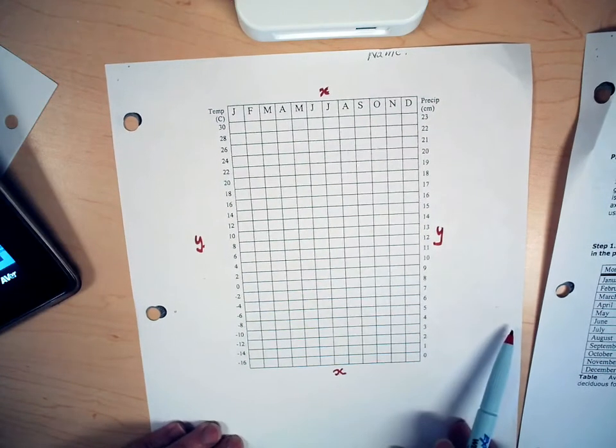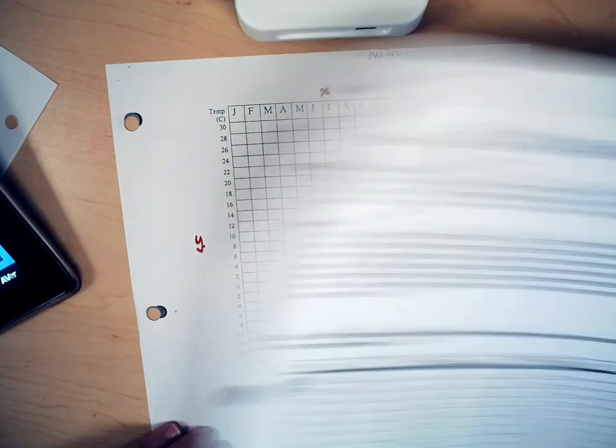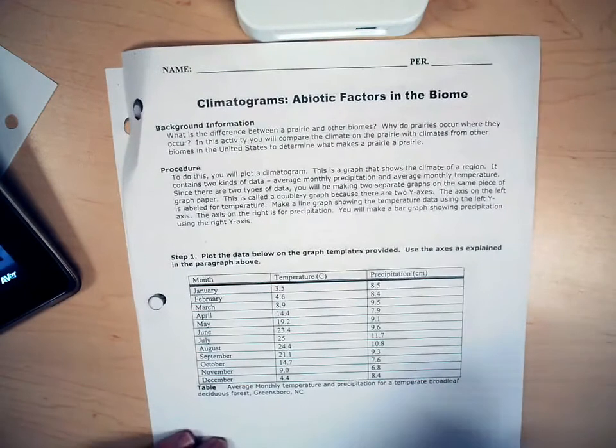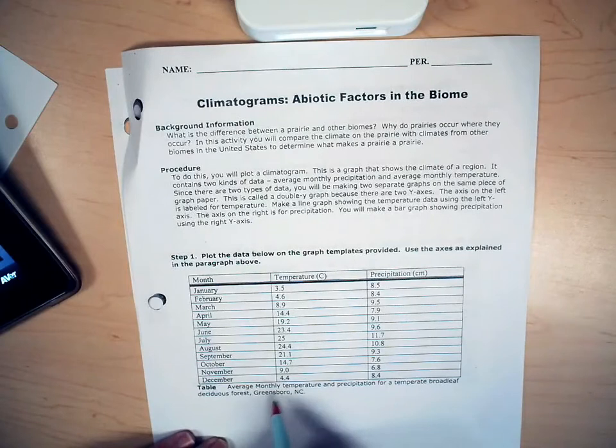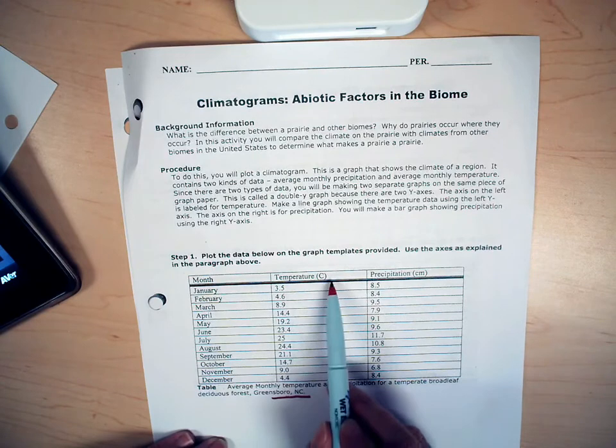So we are going to plot the data from the information sheet and in this case we're going to do Greensboro, North Carolina. Here are the months, the temperature and precipitation.